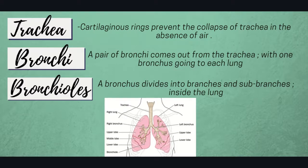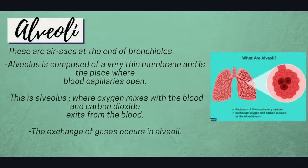Each bronchus divides into branches and sub-branches inside the lungs, which are called bronchioles. At the end of the bronchioles are the alveoli — tiny air sacs where the real exchange of gases occurs. The alveolus is composed of a very thin membrane and is the place where blood capillaries open. It is here that oxygen mixes with the blood and carbon dioxide exits from the blood.